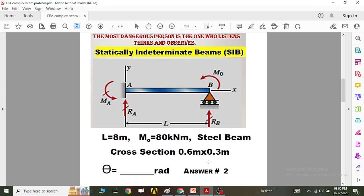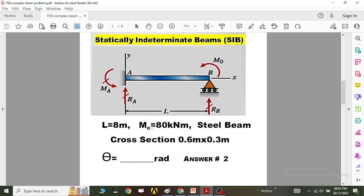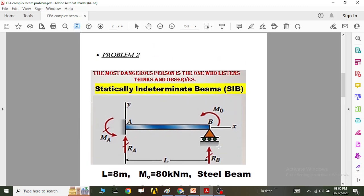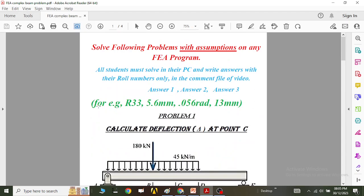You have to solve it and you have to get the slope. You have to calculate the slope for this SIB, statically indeterminate beam. And again, you have to write the answer exactly the same way. Any roll number, for example roll number 50, 5.6 mm, 0.56 radians, 13 mm in the comment file of this video.